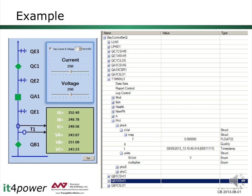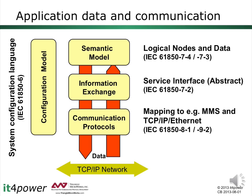Here is a first example of a 61850 data model for a device — a bay controller. The circuit breaker QA1 and disconnectors QB1 and QC1 are controllable. For each switch we find logical node CSWI for control and CILO for the interlocking function. The circuit breaker has logical node XCBR; the disconnectors use XSWI as process interface. The logical node MMXU is used for measurements, providing individual values for phase voltage and current per phase as floating point values.